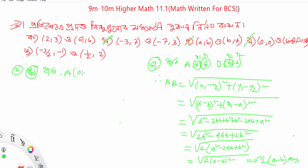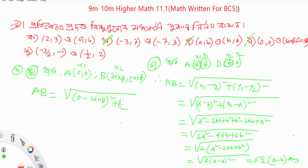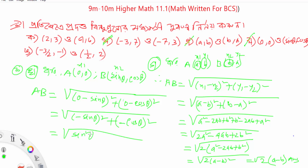New problem: A equals (0, 0) and B equals (sin theta, cos theta). The distance is the square root of sin squared theta plus cos squared theta, which equals the square root of 1, so the distance is equal to 1.